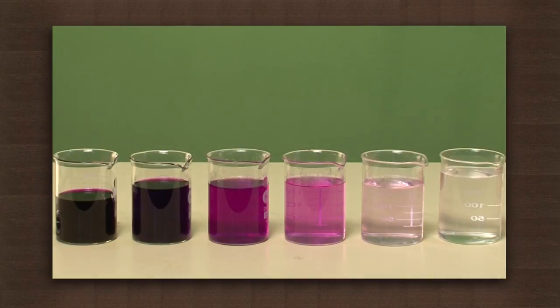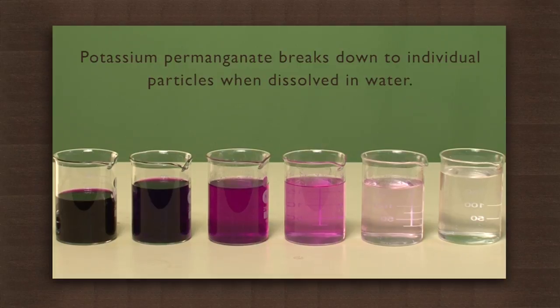You will see that a few potassium permanganate crystals were able to give color to a large amount of water. This is because potassium permanganate breaks down to individual particles when dissolved in water, and the fact that these particles can be distributed in large volumes shows that there must be multitudinous particles in the small amount of potassium permanganate crystals that were taken.